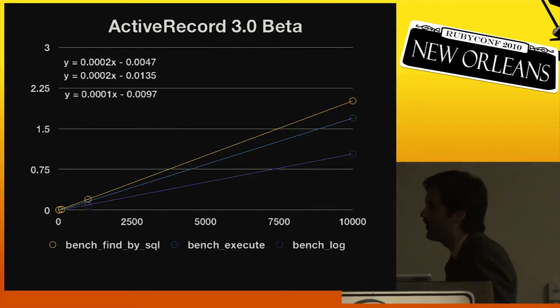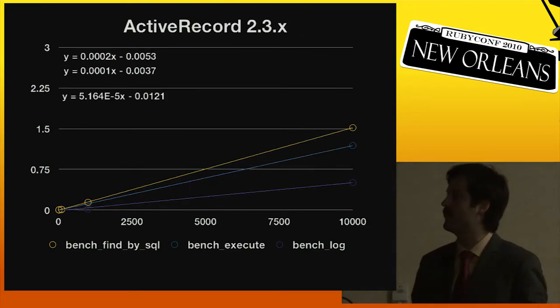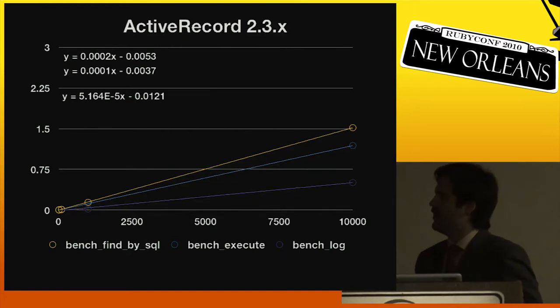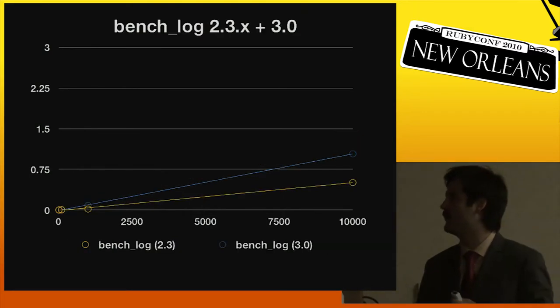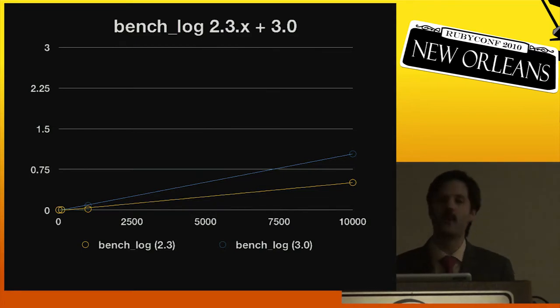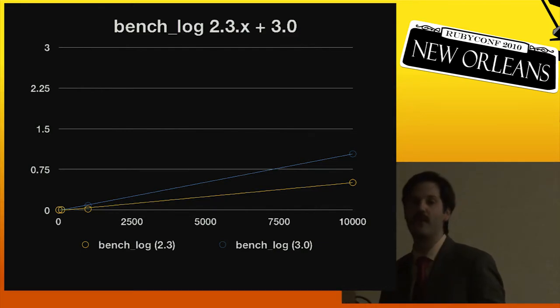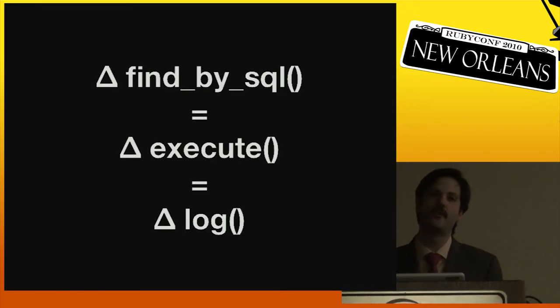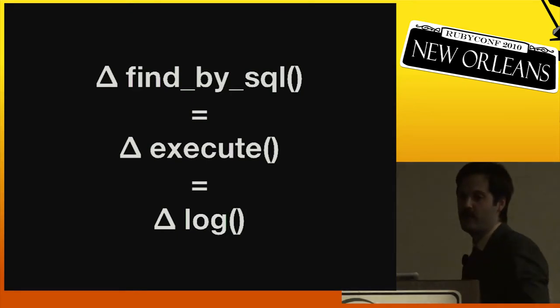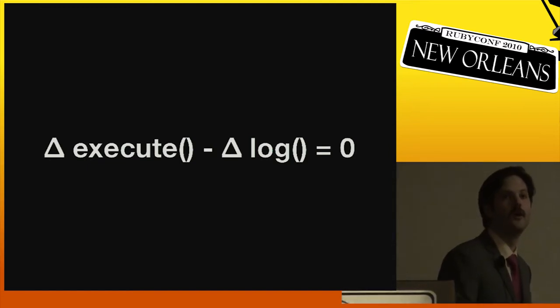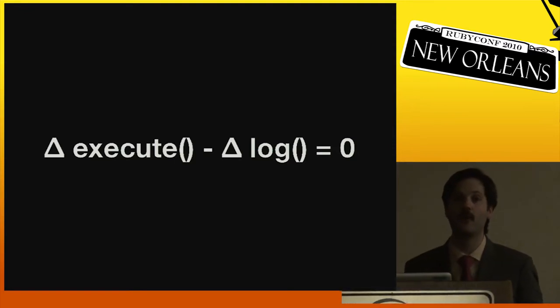We have some tools for benchmarking. And now we need to write our benchmarks. We benchmark find_by_sql, we benchmark execute, and we also benchmark log. We get the results from ActiveRecord 3.0 beta. We see that they look like this. Our purple line. Purple line is bench_log. Blue is execute, and the upper one is find_by_sql. And in Rails 2.3.x it looked like this. I wanted to lay these on top of each other, but there would be six lines, so it was kind of hard to read. So I just laid the two log lines on top of each other. We can see that the blue line, the blue upper line is from Rails 3.0. So the lower yellow line is from 2.3.